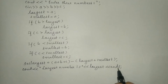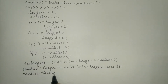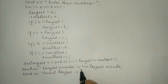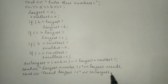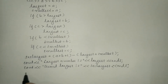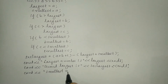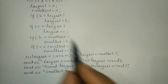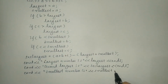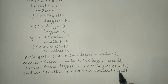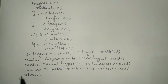Then stream insertion operator endl brings the cursor to the next line. Next, cout prints "Second largest is" followed by the variable sec_largest, then endl. Then cout prints "Smallest number is" followed by the variable smallest, then endl and a semicolon. Finally I write the getch() function and the curly closing brace for the main function.